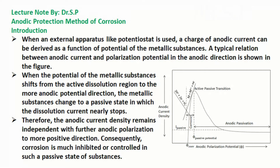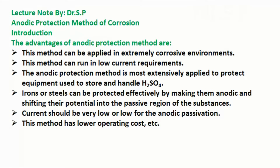When an external apparatus like a potentiostat is used, a charge of anodic current can be derived as a function of potential of the metallic substances. A typical relation between anodic current and polarization potential in the anodic direction is shown in the figure. When the potential of the metallic substances shifts from the active dissolution region to the more anodic potential direction, the metallic substances change to a passive state in which the dissolution current nearly stops. Therefore, the anodic current density remains independent with further anodic polarization to a more positive direction. Consequently, corrosion is much inhibited or controlled in such a passive state.